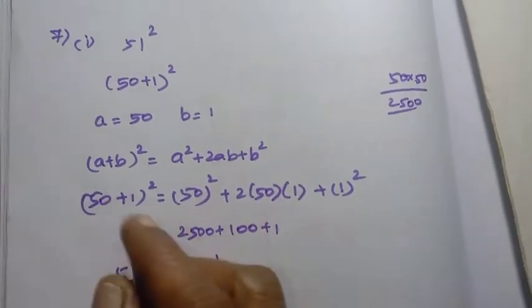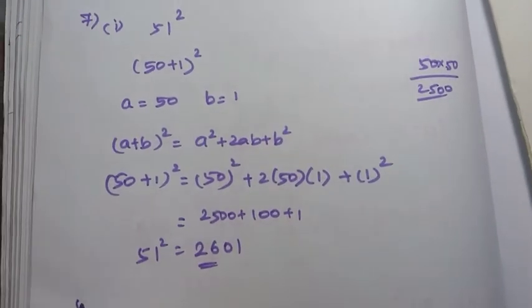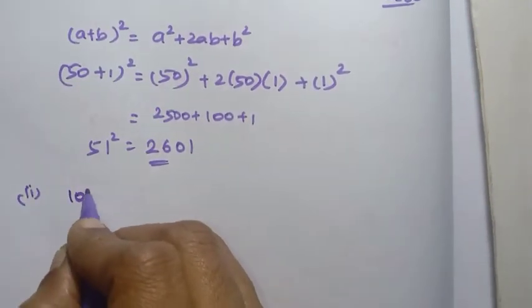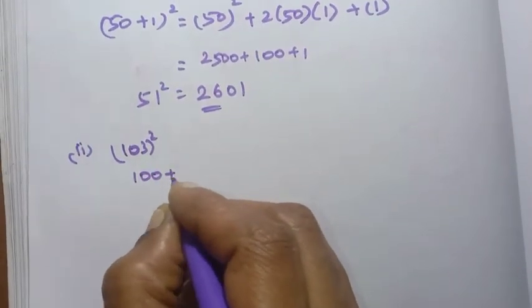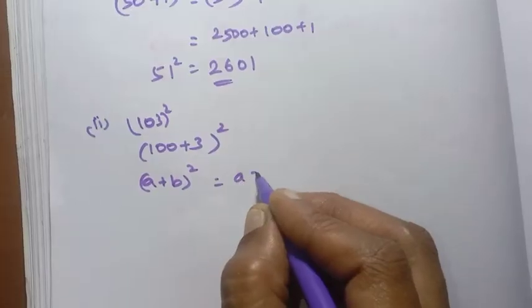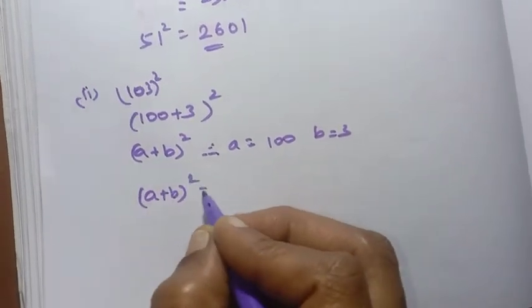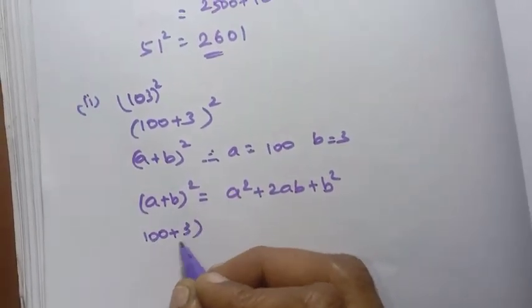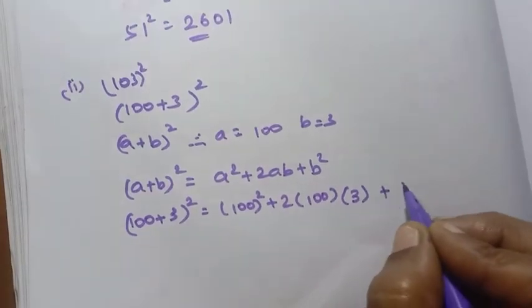So 51 square equals 2,601. Now the second sum is 103 square. 103 whole square can be written as 100 plus 3, the whole square. This uses the formula A plus B whole square, where A equals 100 and B equals 3. So A plus B whole square equals A square plus 2AB plus B square.